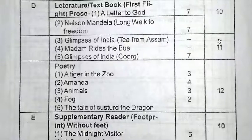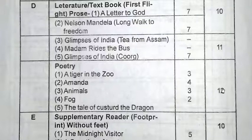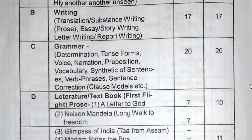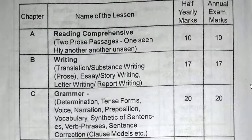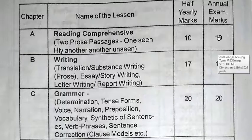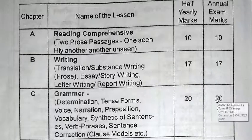The prose and poetry section is 33 marks — the answer to those questions is not going to get you to the pass mark by itself. The minimum pass mark requires more. So your grammar section, writing, and reading comprehension together have 47 marks.